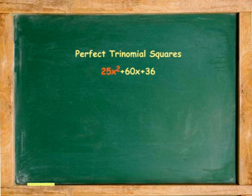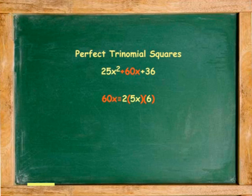The first and third terms — the corners — must be perfect squares. The middle term is twice the product of the square roots of the first and last terms.